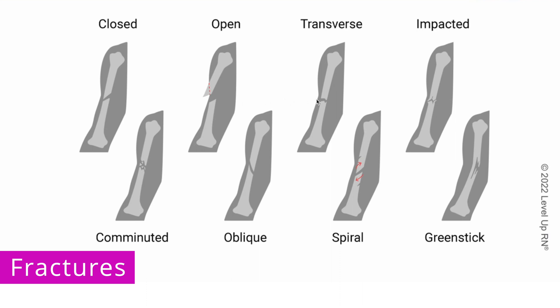With a transverse fracture, the fracture line runs perpendicular to the long axis of the bone. With an impacted or compression fracture, two or more bones are crushed together due to a loading force.